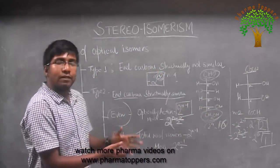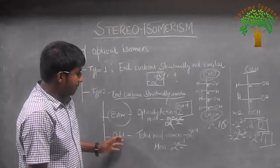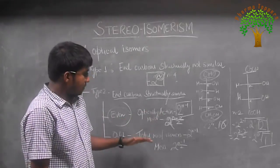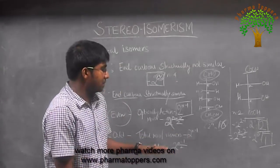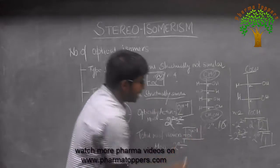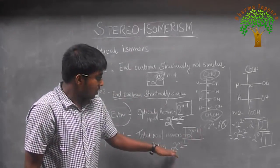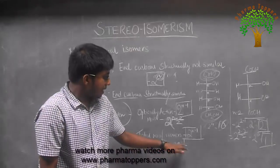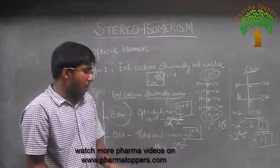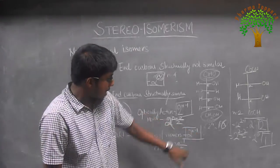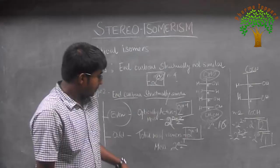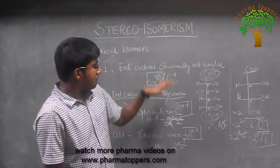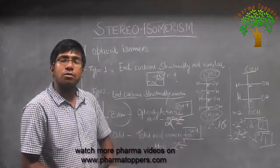When the number of carbons is odd, we use a different set of formulas. The total number of optical isomers is given by 2 to the power (n minus 1), and the number of optically inactive compounds is given by 2 to the power (n minus 1) divided by 2. There is no separate formula for optically active and inactive individually — just remember these formulas for the odd carbon chain case where the end carbons are structurally similar.